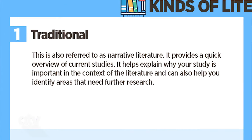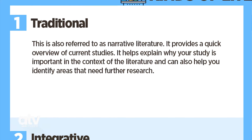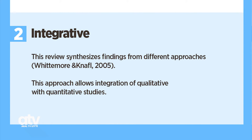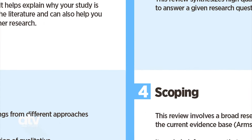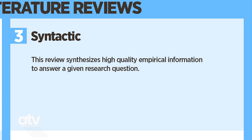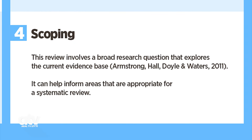What are the kinds of literature reviews? First, Traditional, also referred to as narrative literature review. It provides a quick overview of current studies, helps explain why your study is important in the context of the literature, and can also help you identify areas that need further research. Second, Integrative, which synthesizes findings from different approaches and allows integration of qualitative with quantitative studies. Third, Syntactic, which synthesizes high-quality empirical information to answer a given research question. Fourth, Scoping, which involves a broad research question that explores the current evidence base and can help inform areas that are appropriate for a systematic review.